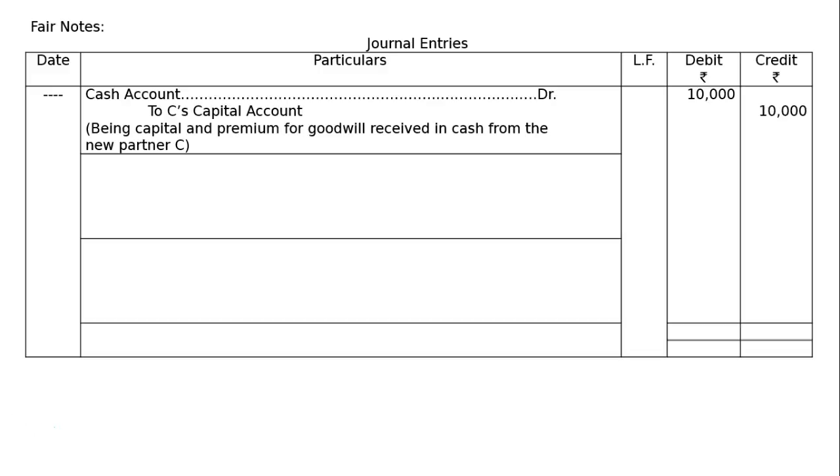C could not pay his share of goodwill rupees 3,000. Hence, C's capital account will be debited by rupees 3,000, and a credit will be given to A's capital account and to B's capital account in sacrificing ratio of 3 is to 2, being premium money not received from new partner transferred to old partner's capital account in sacrificing ratio and debited to C's capital account for rupees 3,000.